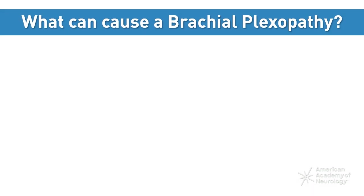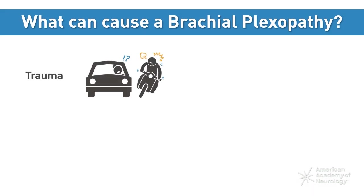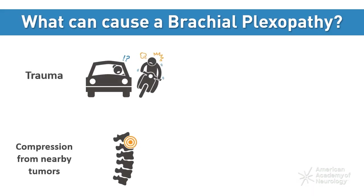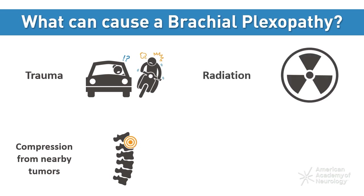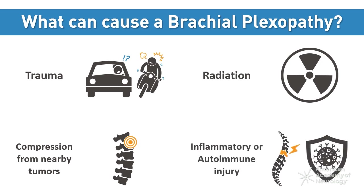Brachial plexopathy can occur from several causes including trauma, compression from tumors originating in nearby tissues, cutaneous radiation injury, and inflammatory or arterial injury. Common differentials include tendinitis, rotator cuff pathology, complex regional pain syndrome, and cervical radiculopathy.